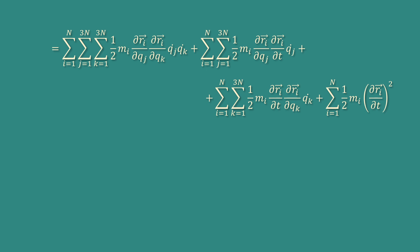The second term is Σᵢ Σⱼ Σₖ ½Mᵢ(∂rᵢ/∂qⱼ)(∂rᵢ/∂t)q̇ₖ, and the third term is Σᵢ Σₖ ½Mᵢ(∂rᵢ/∂t)(∂rᵢ/∂qₖ)q̇ₖ, plus Σᵢ ½Mᵢ(∂rᵢ/∂t)².